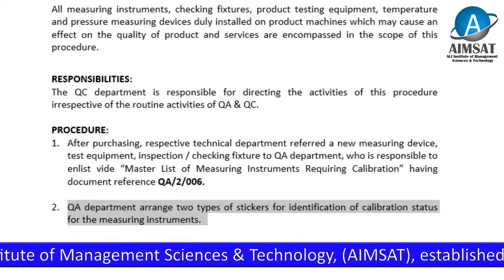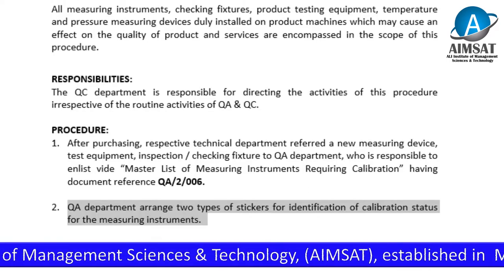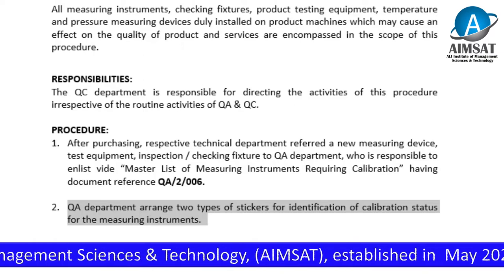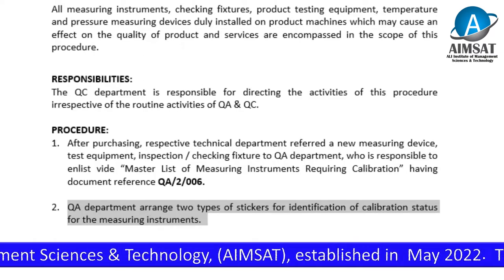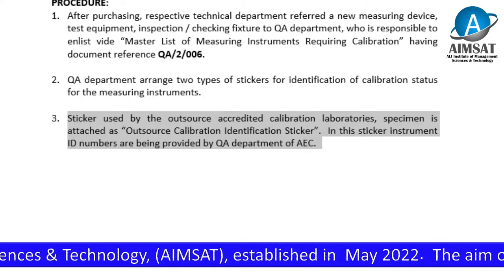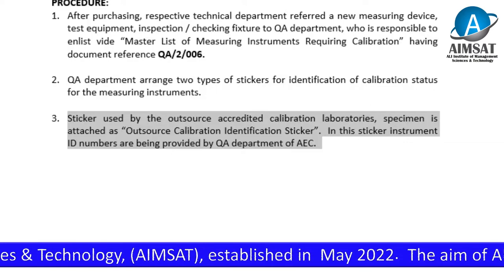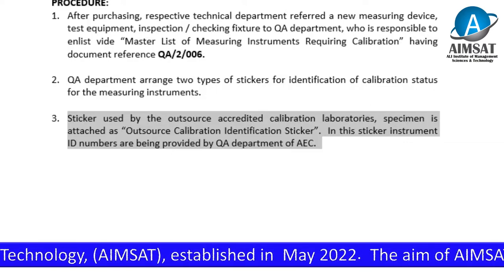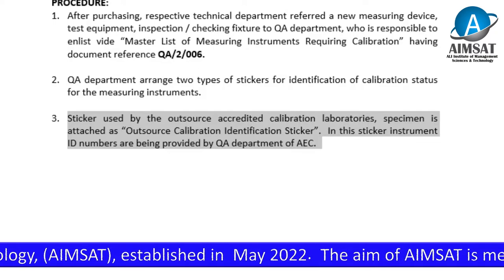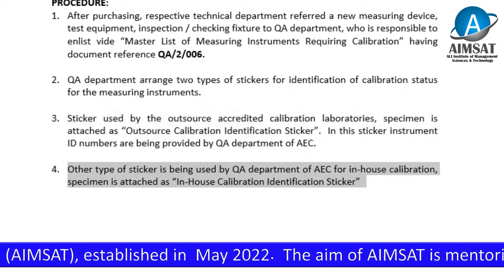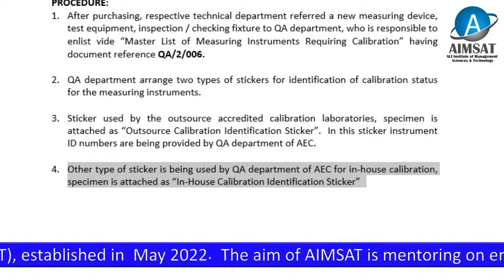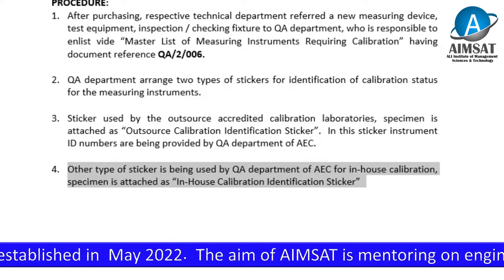The QA department is responsible to enlist within the master list of measuring instruments requiring calibration. QA department arranges two types of stickers for identification of calibration status. One sticker is used by outsource accredited calibration laboratories; the specimen is attached as Outsource Calibration Identification Sticker. The other type of sticker is used by the QA department of Ali Engineering Company for in-house calibration.